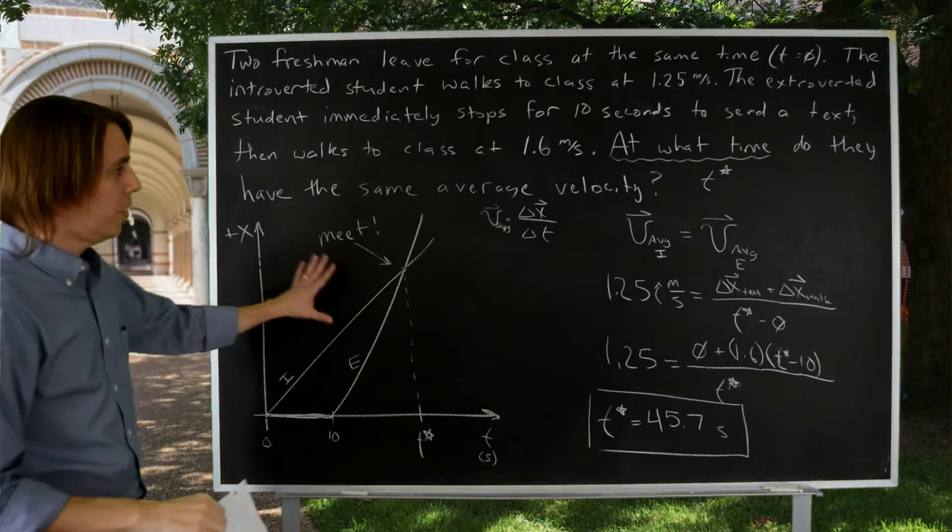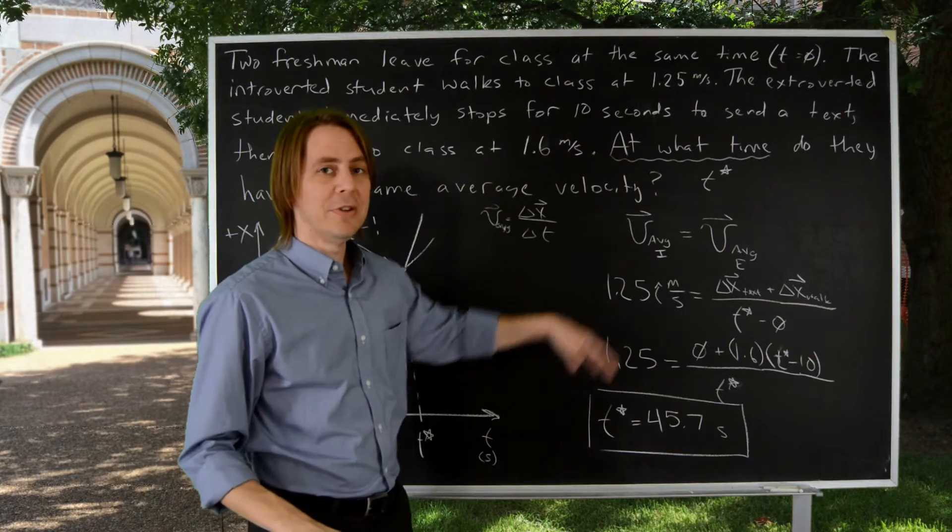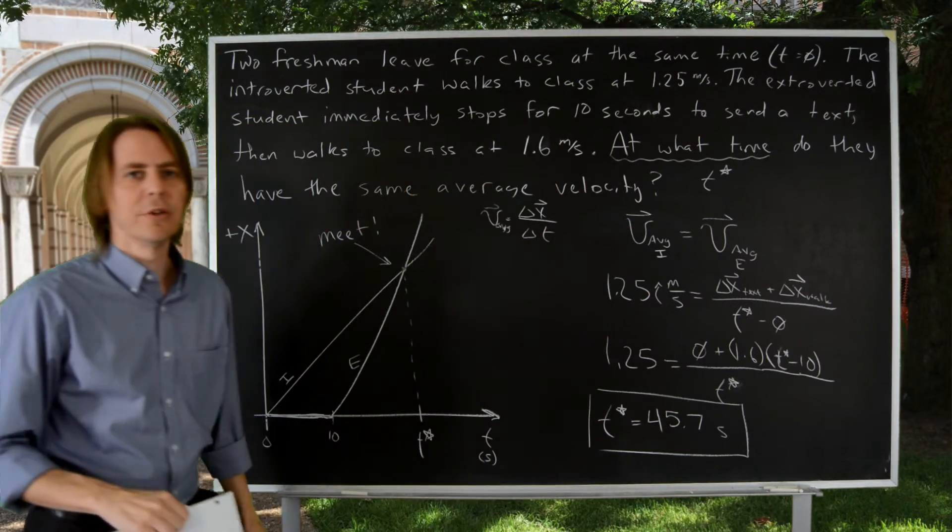So those are the tricks, draw it, label something T star, think about what they're really asking you for, and you'll get there.